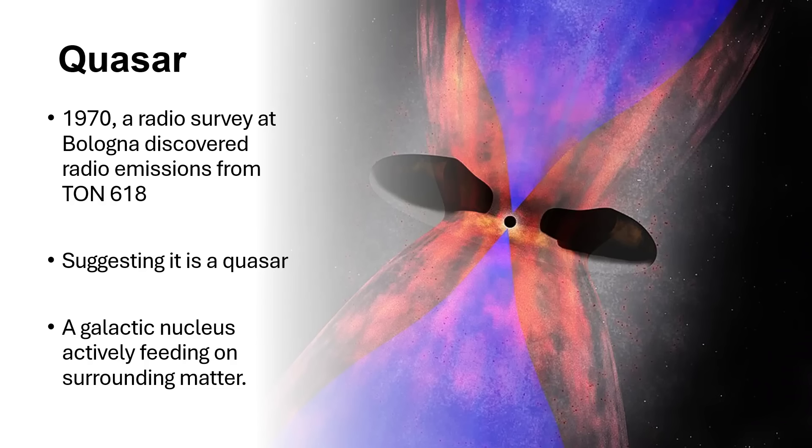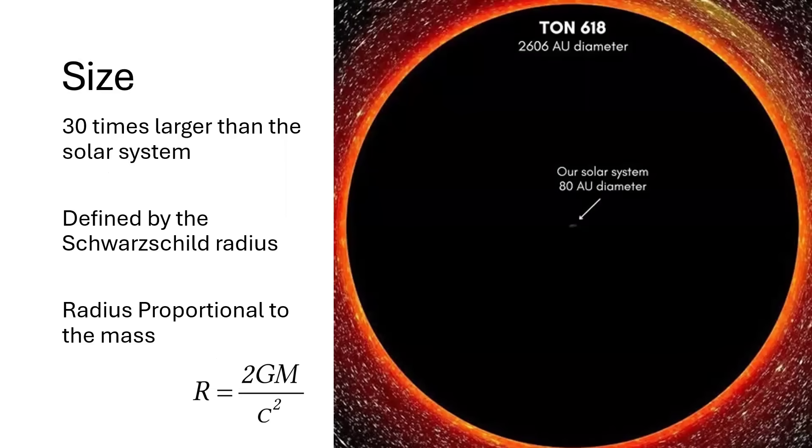I think it was Donald Lynden-Bell in Cambridge who suggested that these quasars might be actively feeding black holes in the nucleus of a galaxy. The enormous energy of matter swirling in and forming an accretion disk around a black hole might be responsible for all of these incredibly powerful beams of radiation. In the center of the accretion disk, you have TON 618, a supermassive black hole.